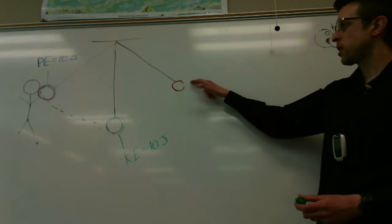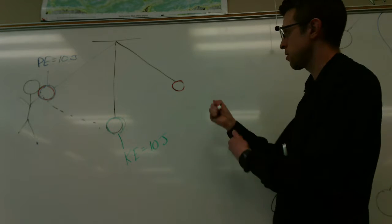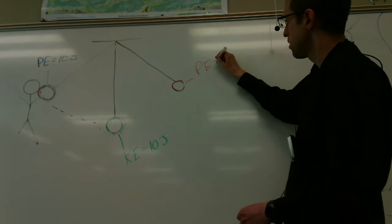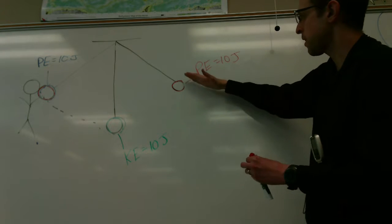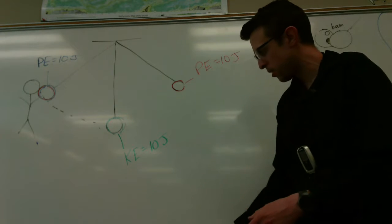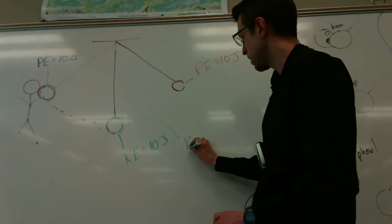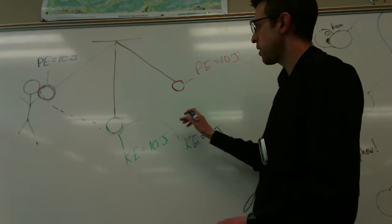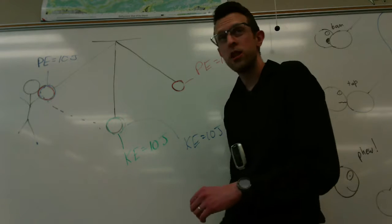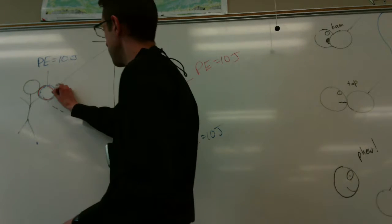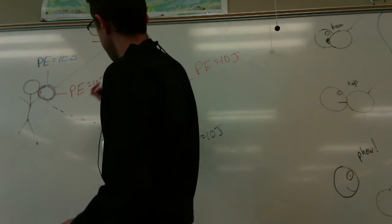Okay. Up here, what kind of energy? Potential energy. How much? Ten joules. Good. Then it swings back down this direction. What do we have for energy at that point? Kinetic. How much? Ten joules. And then right back up here, what do we have at the very end? Ten joules of potential.